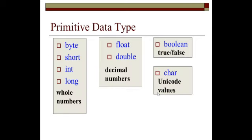There are eight primitive data types. For whole numbers, you have byte, short, int, and long. For decimal numbers, you have float and double. And for Boolean, it represents values of true and false. And you have a char data type for Unicode values. Those are the eight primitive data types.